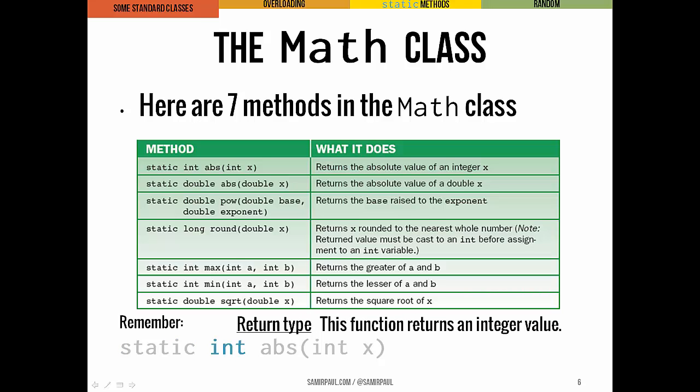They all have a return type, so in this case, if we're looking at the absolute value method, the return type here is integer, and you can see that's this first absolute value method. So this one returns an integer. Then we have the name of the method, so in this case, it's abs for absolute value.